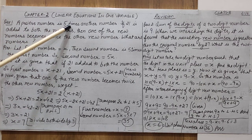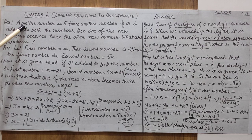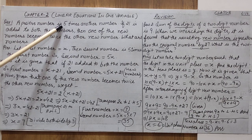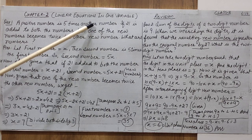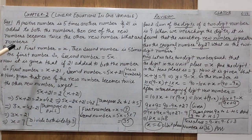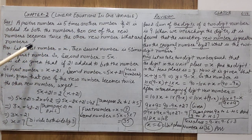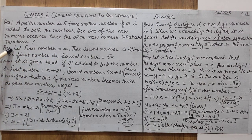A positive number is 5 times another number. The number is positive and it is 5 times — meaning multiplied by 5 — another number. If we don't know the other number, how can we find the positive number? First, let us suppose the first number is x.